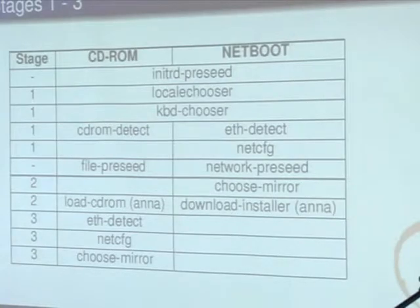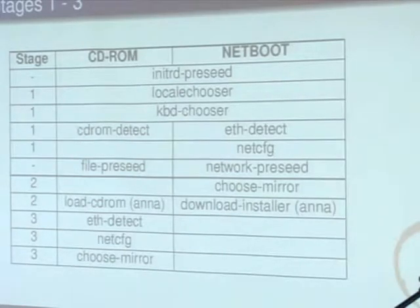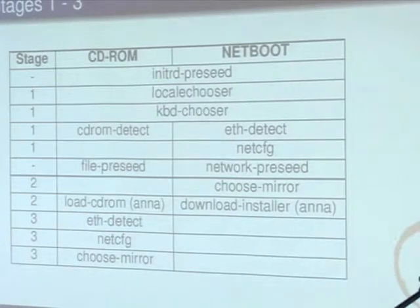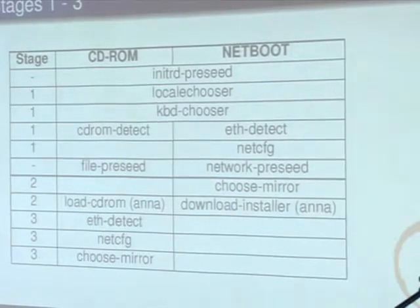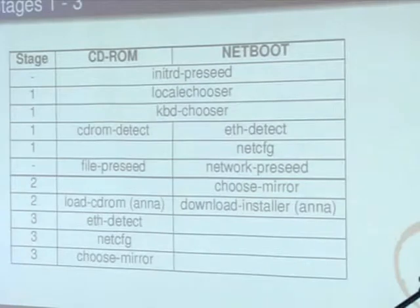The first bit is not really part of the stage at all, but that's when you do automated installs using initRD preseeding, which means you include a preseed file inside the initRD, and that's read automatically by the installer. Then you get language and country selection, which determines the locale, keyboard chooser, and then it starts to diverge. For CD-ROM installation, you need to load the additional components the installer needs from the CD, so you need to detect the CD and do some hardware detection.